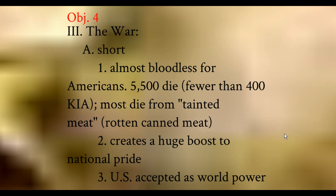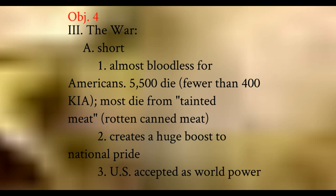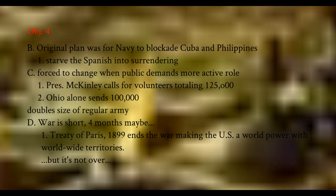The war did create a huge burst of national pride, and the United States became known as a world power. Through the Treaty of Paris, we gained territories of Puerto Rico and Guam. We paid Spain $20 million for the Philippines, and we also got Cuba — not as a territory, but as a protectorate. We decided to stay in Cuba to help them set up their government. The Foraker Act made Puerto Ricans U.S. citizens in 1917.